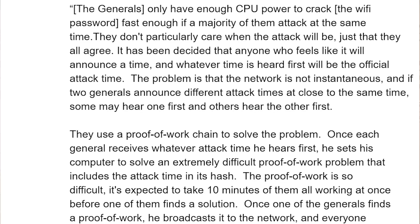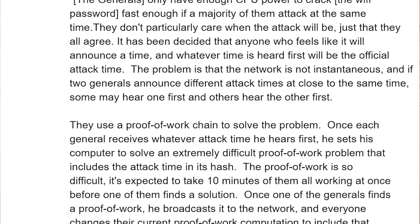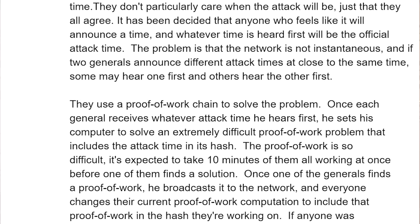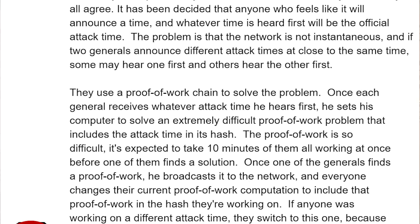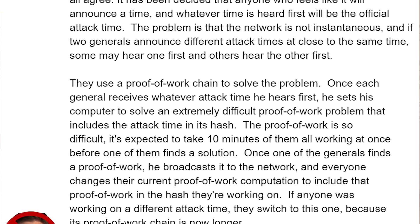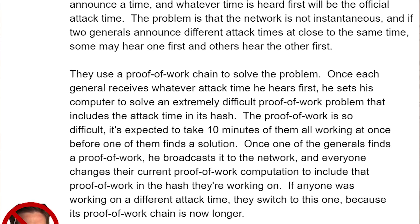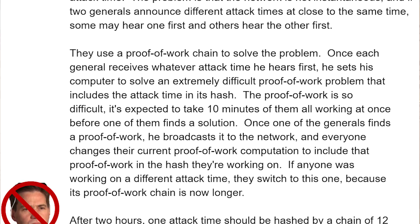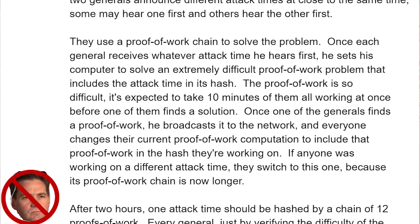In an email from Satoshi Nakamoto in November 2008, he explained Byzantine fault tolerance enabled by proof of work using an example of Byzantine generals brute-forcing a Wi-Fi password. From the email: 'The generals only have enough CPU power to crack the Wi-Fi password fast enough if a majority of them attack at the same time. They don't particularly care when the attack will be, just that they all agree. Anyone who feels like it will announce a time and whatever time is heard first will be the official attack time.' If two generals announce different attack times at close to the same time, some may hear one first and others hear the other — so they use a proof of work chain to solve the problem. Each general sets his computer to solve an extremely difficult proof of work problem that includes the attack time in its hash. The proof of work is so difficult it's expected to take 10 minutes of them all working at once before one finds a solution.